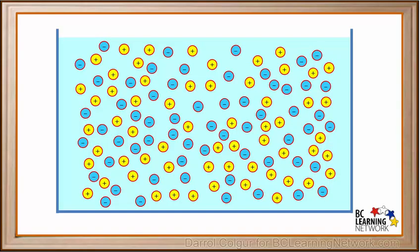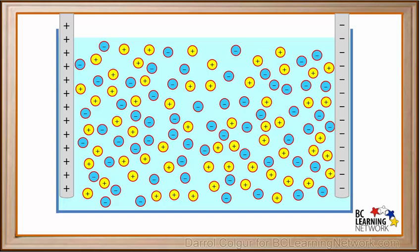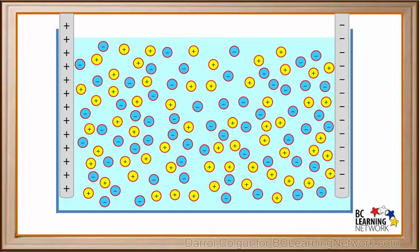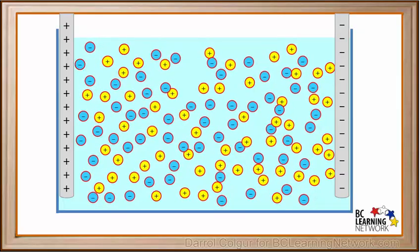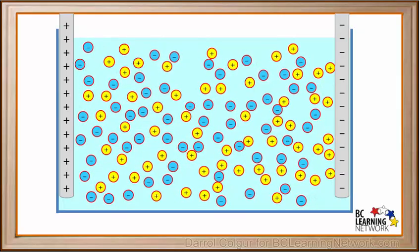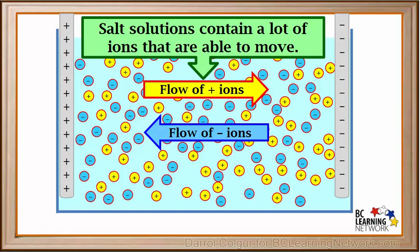This model represents a solution of salt. We'll add two probes from the conductivity tester — one with a positive charge and the other with a negative charge. Because opposite charges attract, the positive ions move toward the negative probe on the right, and negative ions move toward the positive probe on the left. So solutions that have a lot of ions are able to conduct electricity through the movement of their ions. Salt solutions contain a lot of ions that are able to move easily, making salt solutions good conductors of electricity.